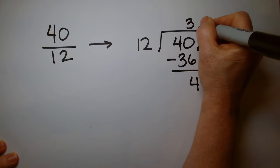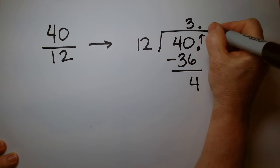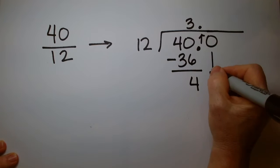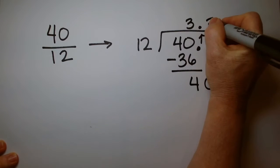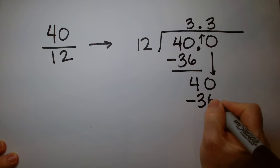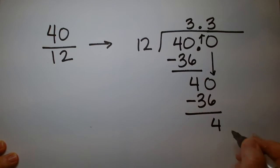I have a decimal point here. Let's push it up. I have as many zeros as I'd like. I'll drop that 0. 12 goes into 40 again 3 times. We take the difference and wind up with another 4. Are you seeing a pattern?